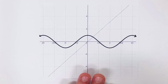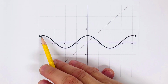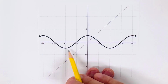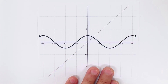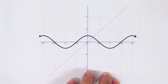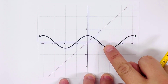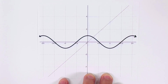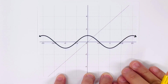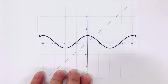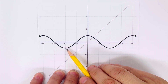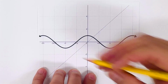We are given this graph of cosine x, and we are going to get the inverse of cosine from this graph. What we're going to do first is trace this y equals cosine x graph using a pencil.